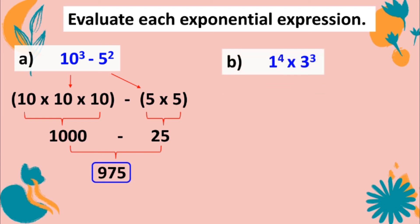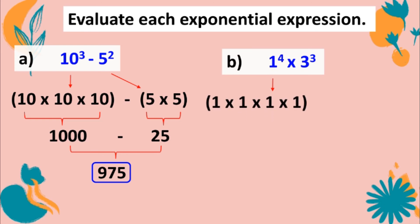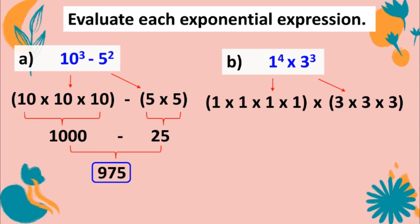Letter B: 1 to the fourth power times 3 cubed. The expanded form of 1 to the fourth power is 1×1×1×1, and 3 cubed is 3×3×3. Simplifying: 1×1×1×1 equals 1, and 3×3 is 9, times 3 is 27. Then 1 times 27 equals 27.